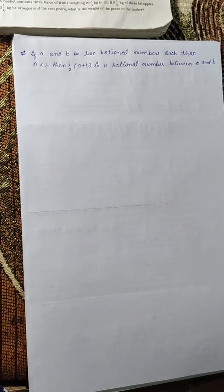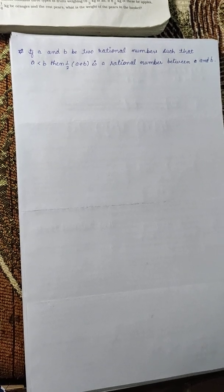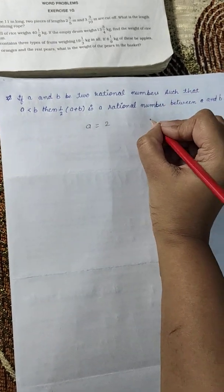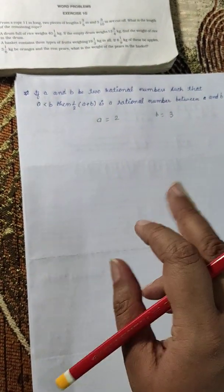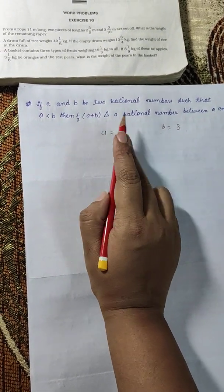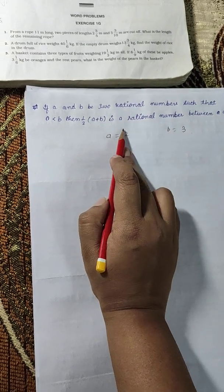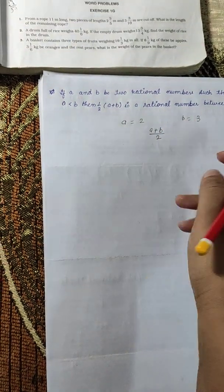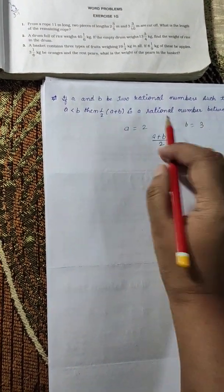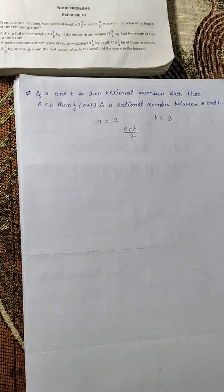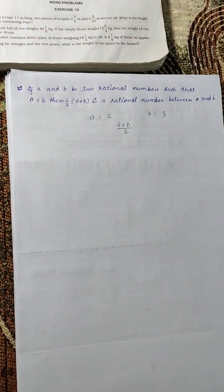It states that if a and b are two rational numbers — for example, a equals two and b equals three — where a is less than b, then we can apply the formula (a + b) / 2. When we apply this formula, the result will be a rational number between a and b.